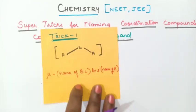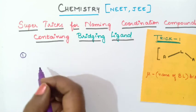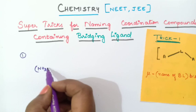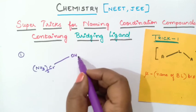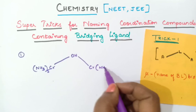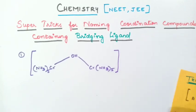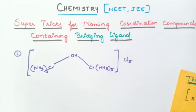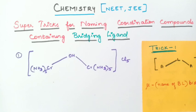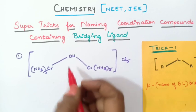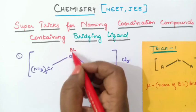Let us take one example: Cr(NH₃)₅–OH–Cr(NH₃)₅ with Cl₅. The OH here is the bridging ligand — I'll mark it BL for bridging ligand. We will use this trick to give the name of this compound.